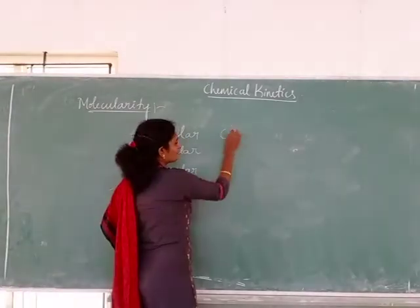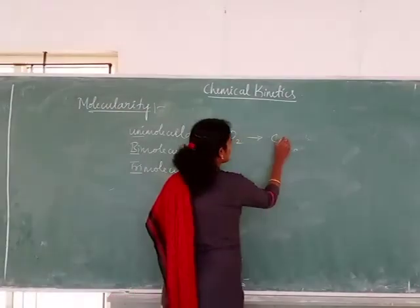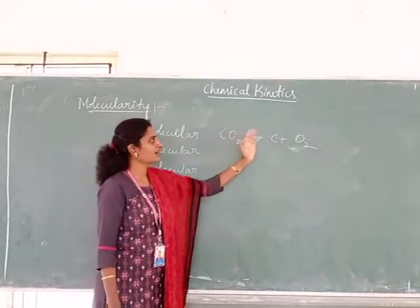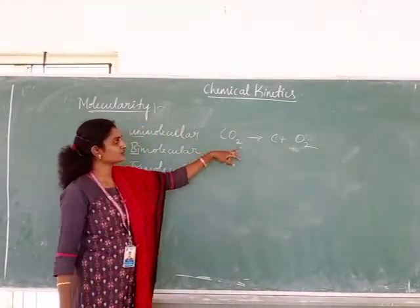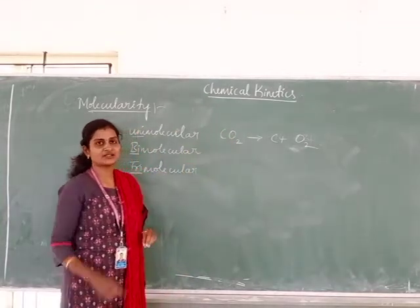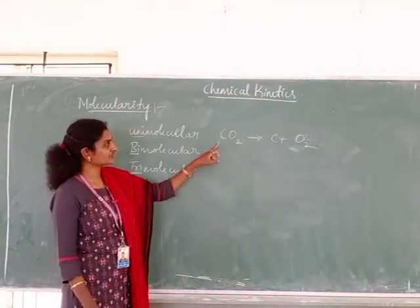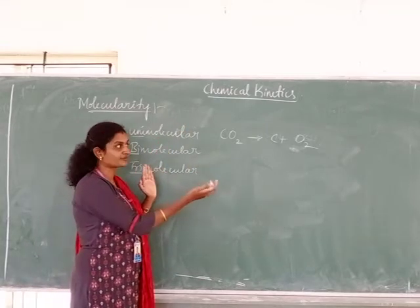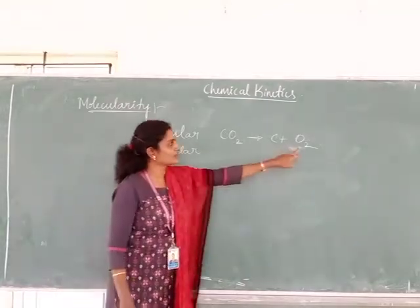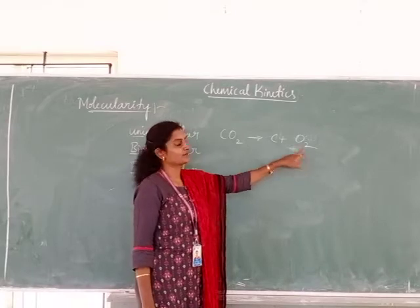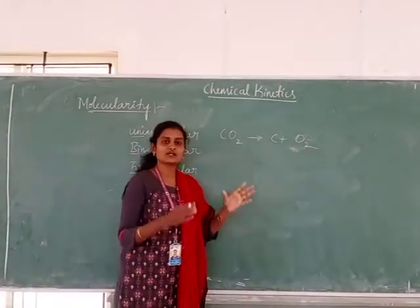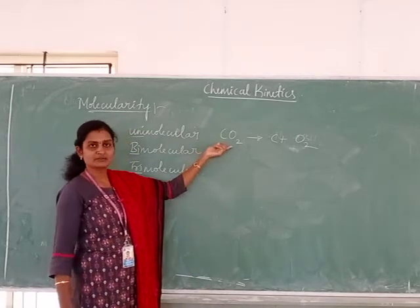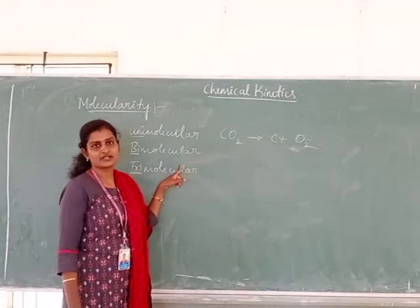For example, the decomposition of carbon dioxide gives carbon and oxygen. If we consider this equation in the left-to-right direction, only one molecule is utilized in the chemical reaction. Therefore, this example comes under unimolecular reaction. Whereas if you consider the reaction from right to left, both carbon and oxygen collide simultaneously to create carbon dioxide — so it becomes a bimolecular reaction.